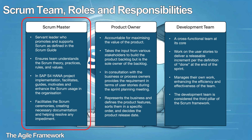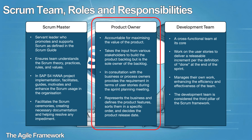The key responsibilities of a Scrum master in the SAP S/4HANA project implementation are to facilitate, guide, motivate, and enhance Scrum usage in the organization. The Scrum master is responsible for arranging and facilitating the Scrum ceremonies, creating necessary documentation, and helping resolve any impediments. The product owner role is accountable for maximizing the value of the product. The product owner can take input from various stakeholders to build the product backlog but is the sole owner of the backlog. The product backlog cannot be changed by anyone except the product owner, with the exception that this responsibility is delegated to the development team. In a traditional SAP implementation project, the business owners or process owners provide the requirements. The product owner, in consultation with the business or process owners, provides the requirements in terms of user stories during the sprint planning meeting. The user story is further clarified if the need arises by the product owner with the necessary support from the business or process owner.